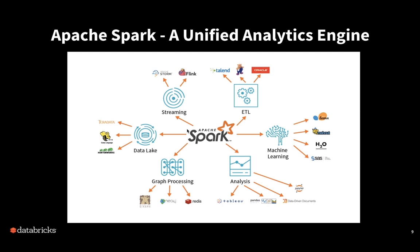When I talk about unified analytics, what I really mean is that you've got one core engine — Apache Spark — that can support a whole variety of different types of workloads. To begin with, we want to be able to ETL our data. We're going to pull data from a variety of different systems and bring it into what's known as a data lake. A data lake solves a number of challenges that come with a data warehouse, in the sense that a data warehouse often was very structured and required a lot of upfront work to capture and clean the data before you could extract insights.